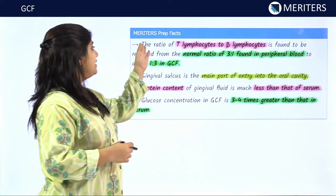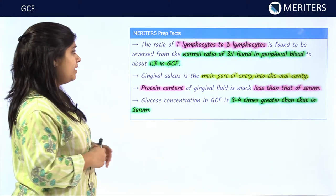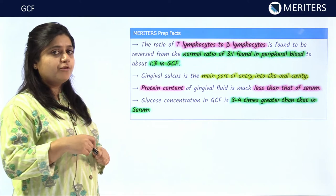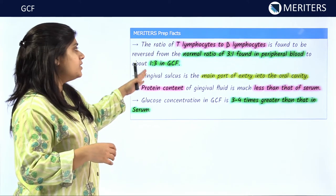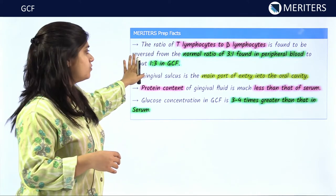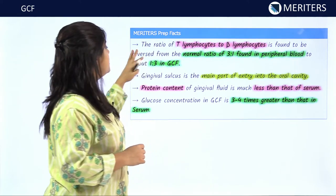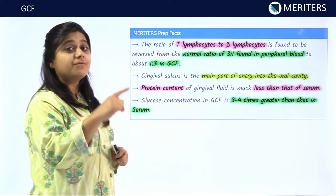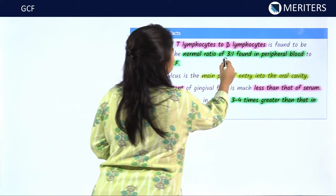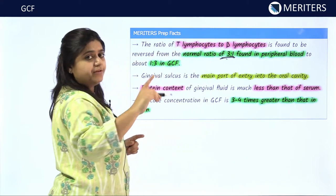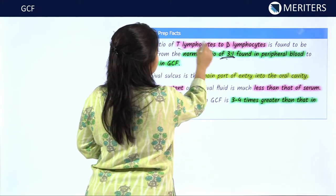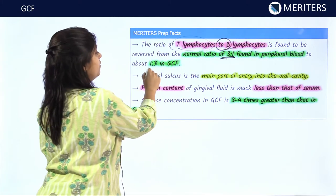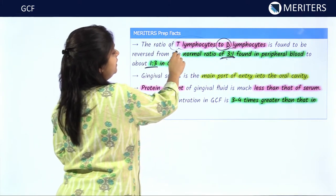Let us discuss some important facts for MCQ purposes. The first point is the ratio of T lymphocytes to B lymphocytes found in blood is 3:1 — meaning in peripheral blood, T lymphocytes are more than B lymphocytes. However, this ratio is reversed in GCF where it is 1:3, so the level of T lymphocytes is lesser in GCF than B lymphocytes.